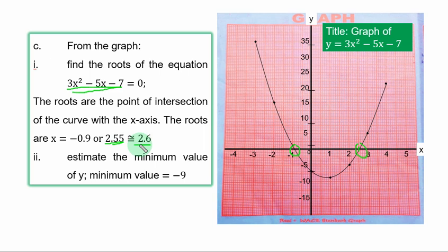Roman figure 2. Estimate the minimum value of y. That is the least point, the point where the curve starts turning up. That point is here. If you trace to y axis, you have minus 9 as the minimum value of y.